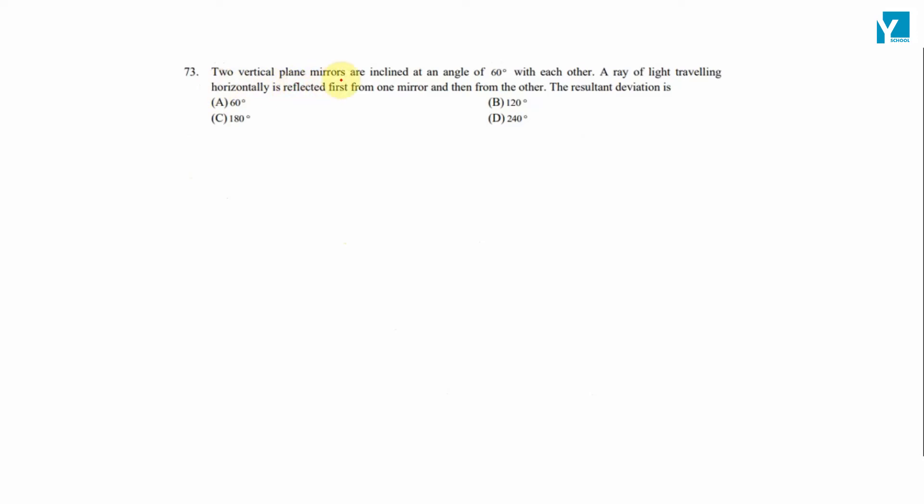Two vertical plane mirrors are inclined at an angle of 60 degrees with each other. A ray of light traveling horizontally is reflected first from one mirror and then from the second mirror. The resultant deviation is...